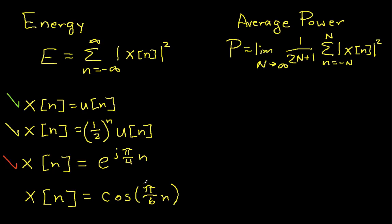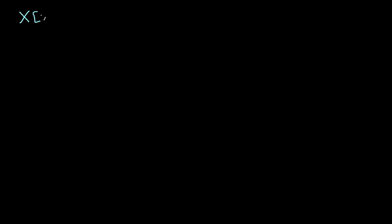We've got one more. The last one we have to do is x of n equals cosine of pi over 6 times n. So let's bring up a blank spot and write x(n) equals cosine(pi/6·n).